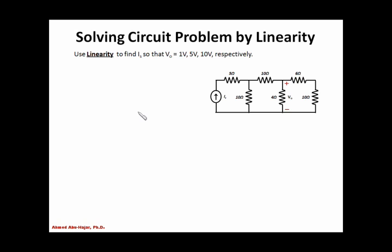Let's do a numerical example. We have a circuit here with one single source and a bunch of resistors. We are asking you to use the concept of linearity to find IS, the input source current, such that Vout — the voltage across the 4 ohm resistor — will be 1 volt, 5 volts, or 10 volts respectively.